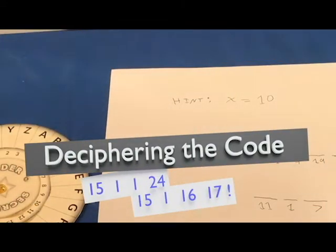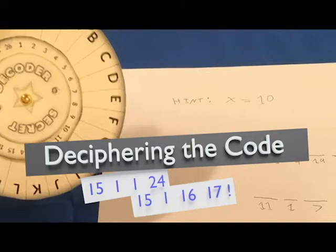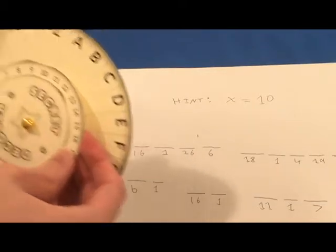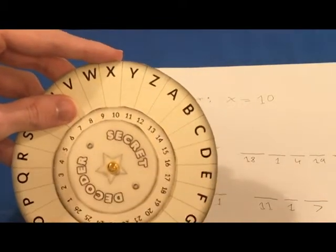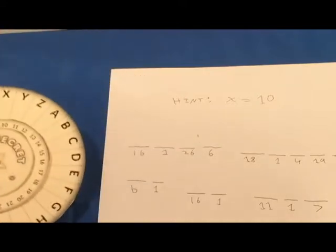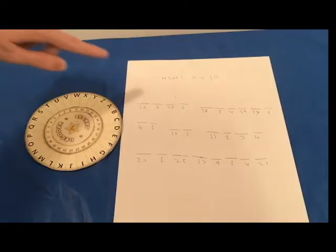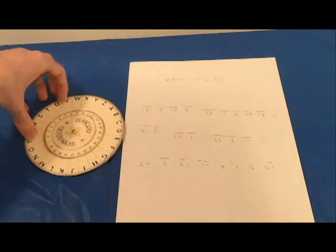To decipher this cipher text and turn it into plain text with a hint. The hint here is x equals 10, so we will line up the x and the 10 on the wheel. Now that those are lined up, our first number is 16.